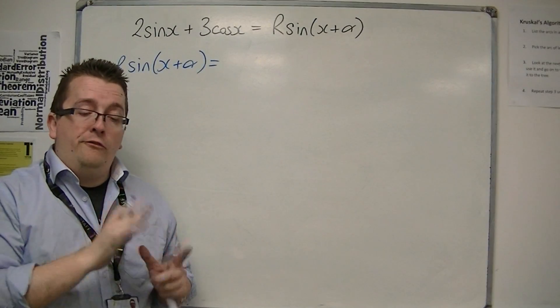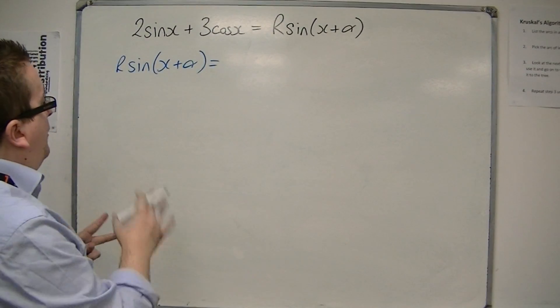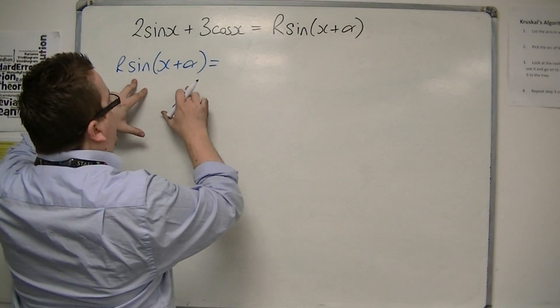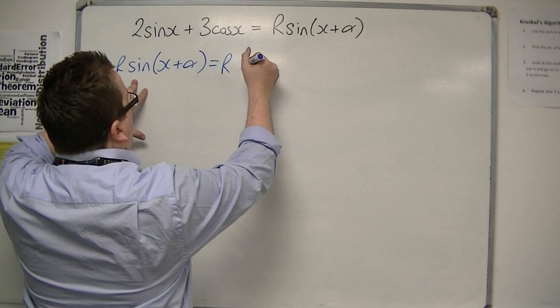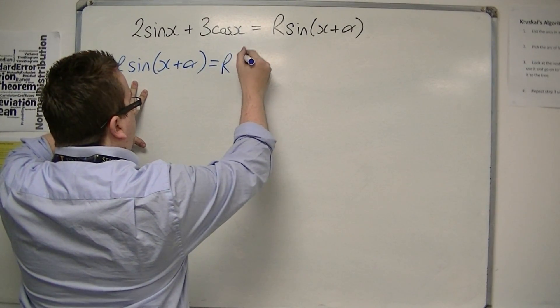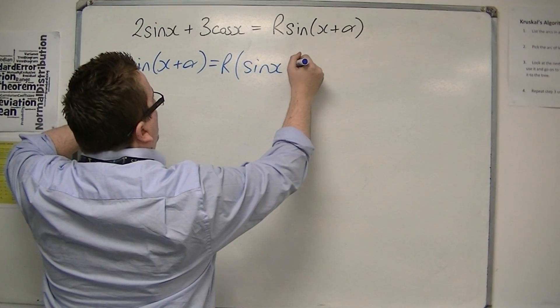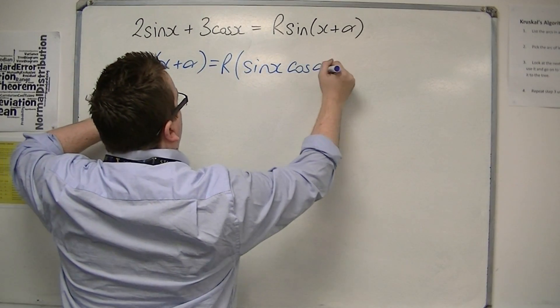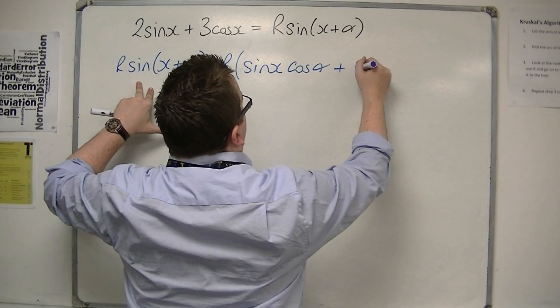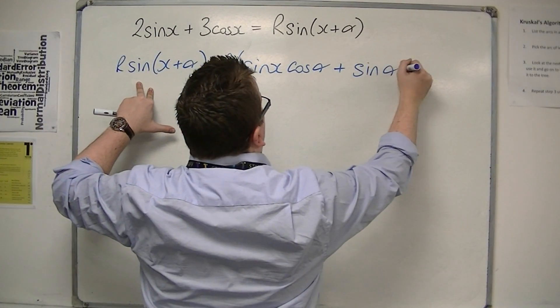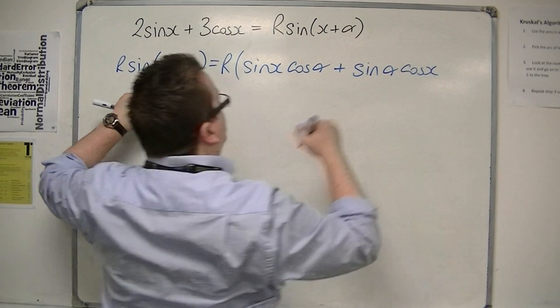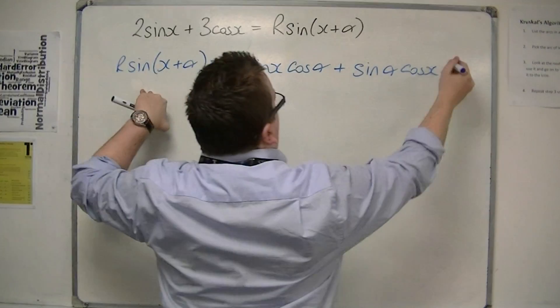Using the trig formula from the formula booklet for sin(a + b), this must be r lots of sin x cos α plus sin α cos x, bracket.